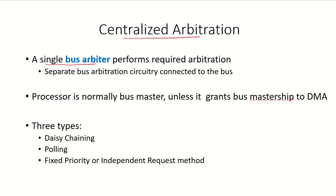In centralized arbitration, there is a single bus arbiter which performs the required arbitration and decides which device will become the bus master. There is a separate bus arbitration circuitry connected to the bus. Usually the processor is the bus master unless it grants bus mastership to the direct memory access controller. In centralized arbitration, there can be three types of arbitration schemes: daisy chaining, polling, and fixed priority or the independent request method.